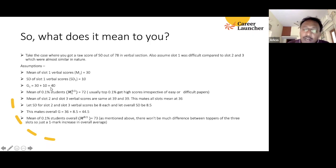What happens if all the 0.1% of students of all the slots are considered? Let's say it is 73, because your slot was difficult, the other two slots are easy, so the 0.1% of the overall will be slightly more than 72. Let's say the mean of 0.1% for slot 2 and slot 3 is 75 because it's higher.